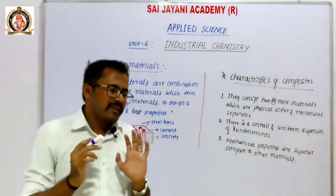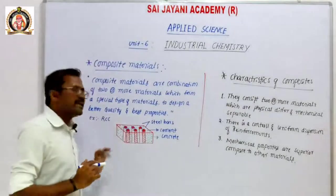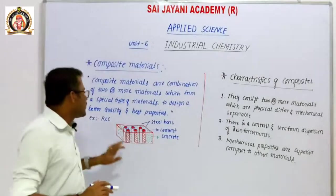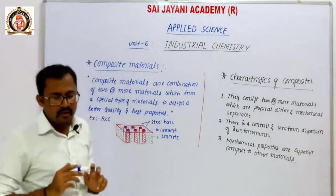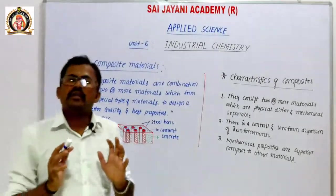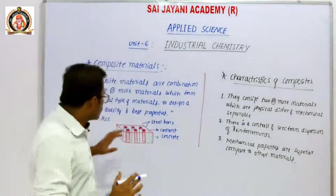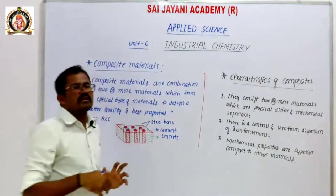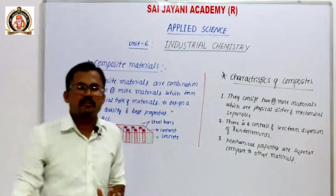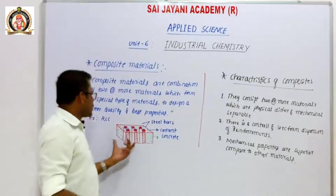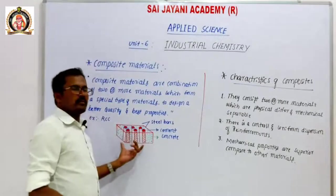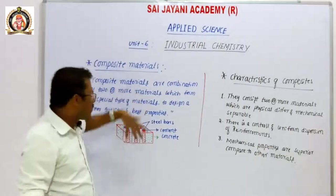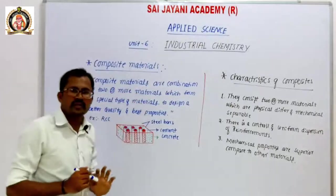An example of composite material is RCC — Reinforced Cement Concrete. Usually, we have a cement block and then we have steel bars inside as reinforcement. So the cement block with reinforcement steel bars forms a composite material.